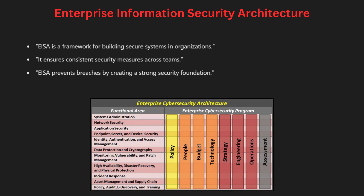Enterprise Information Security Architecture, or EISA, is a framework that helps large organizations build secure systems. It involves designing and implementing security measures across all parts of a business, from employee access controls to securing network data. The goal is to ensure all parts of the organization are protected consistently, helping companies prevent breaches and manage risk across their entire system.